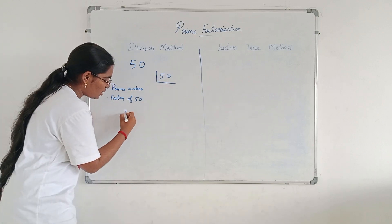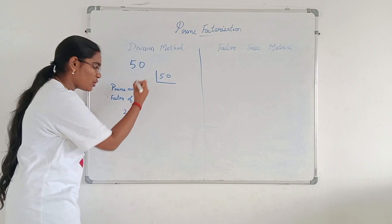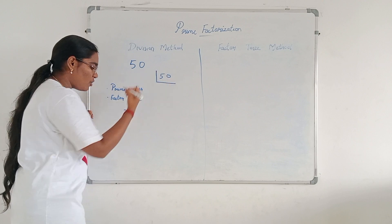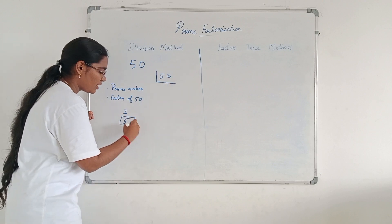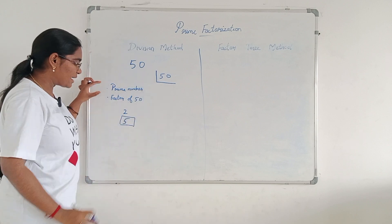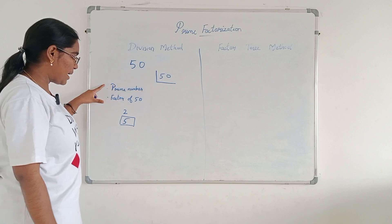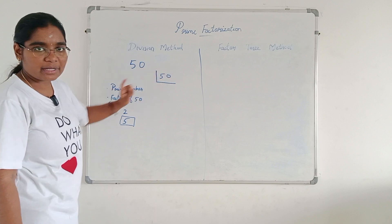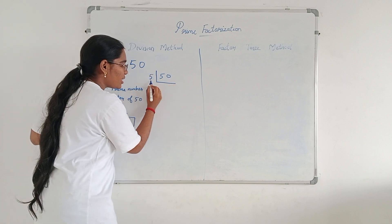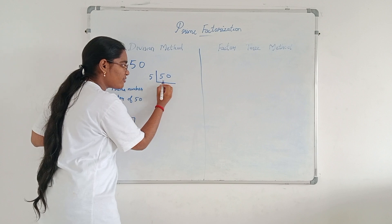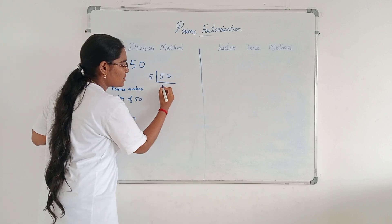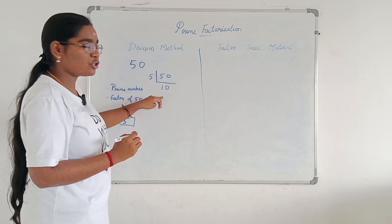Another possibility: you can also choose 5, because 5 is a prime number and it is a factor of 50. Whatever number you write, it should satisfy these two conditions — it should be a prime number and it should be a factor of the given number. Here I am choosing 5. In the 5 table, 5 into 10 gives 50, so I put 10.